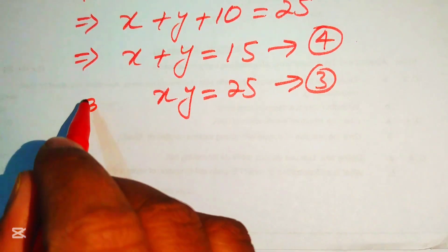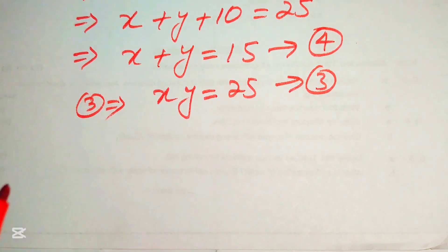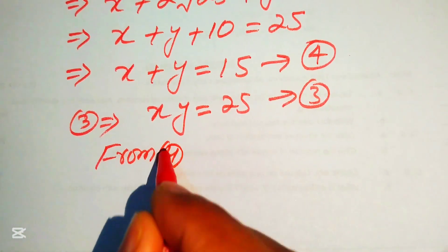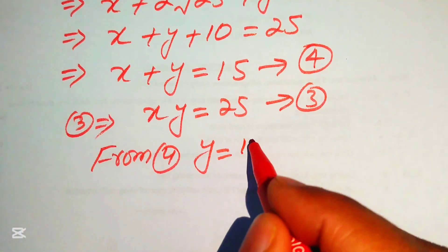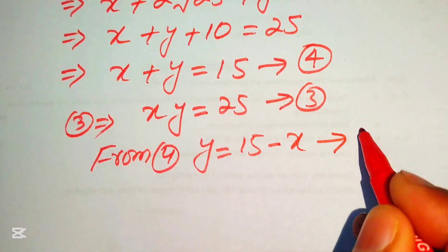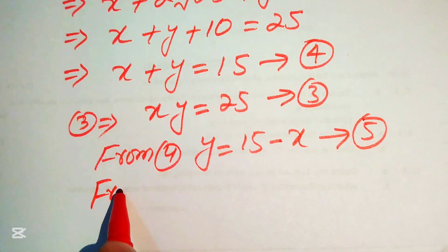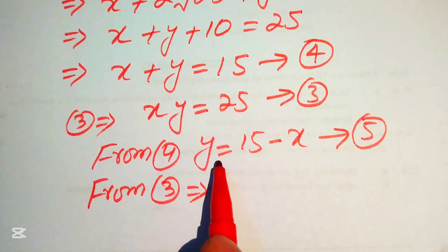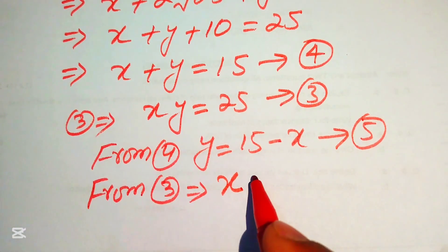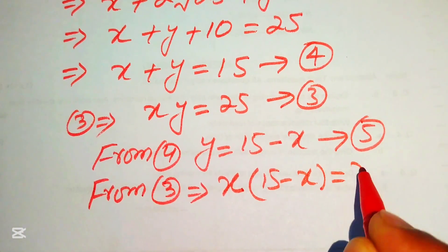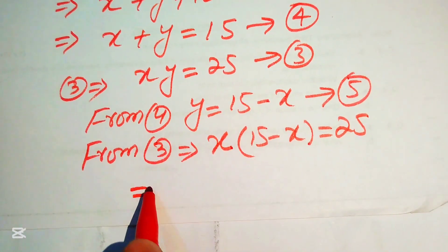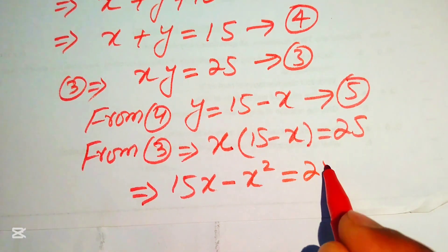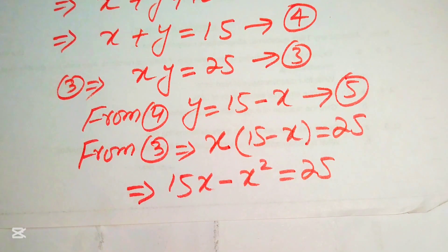We now have equation number 3: xy equals 25, and equation number 4: x plus y equals 15. From equation number 4, we find y equals 15 minus x — call this equation number 5. Substituting into equation number 3: x times (15 minus x) equals 25, which expands to 15x minus x squared equals 25.